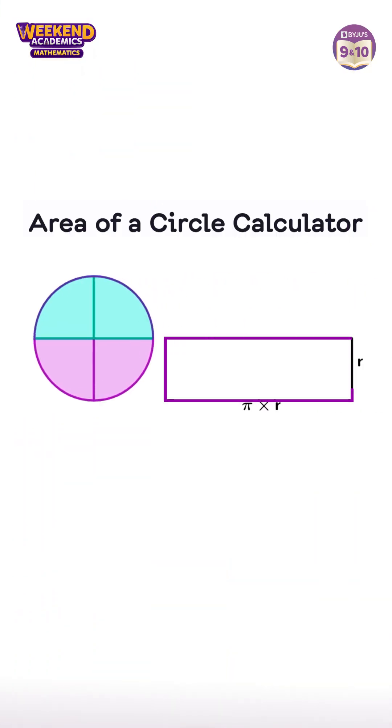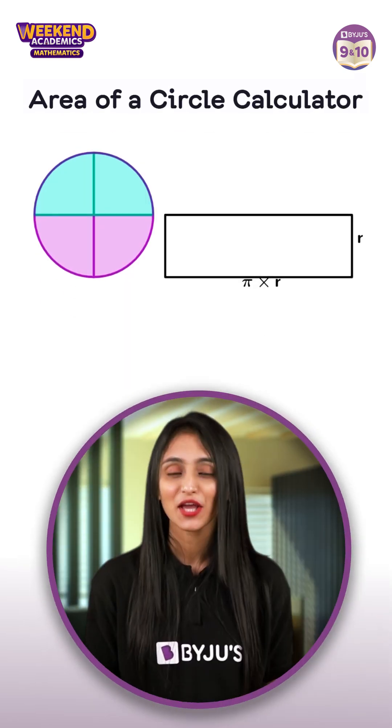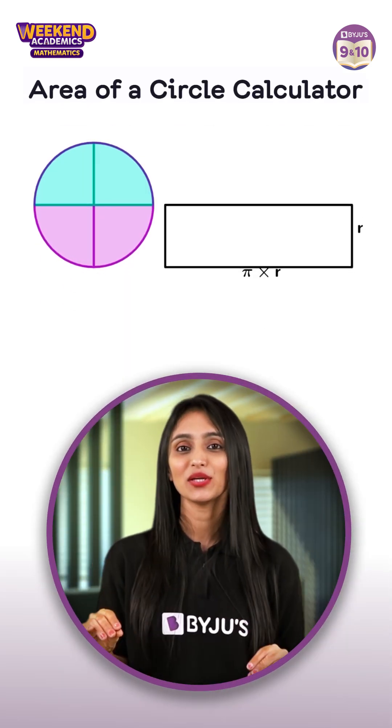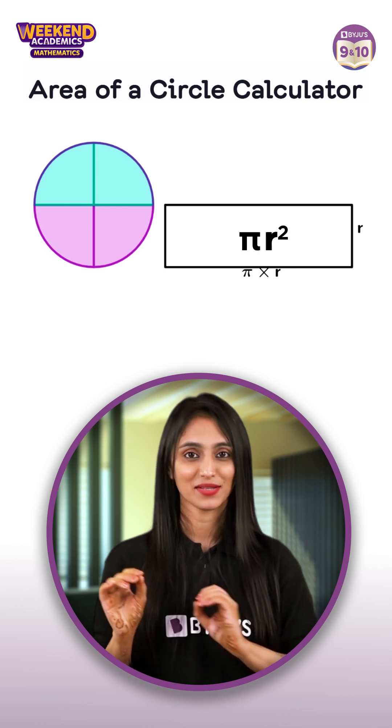Firstly, let's consider a rectangle whose length is πr units and breadth is r units. So the area of the given rectangle is going to be πr².